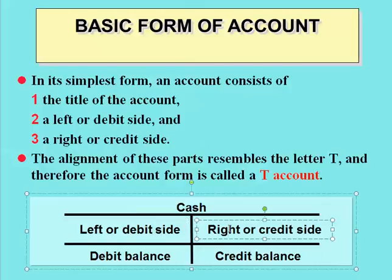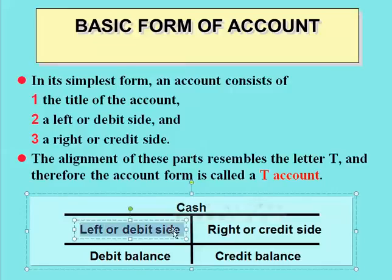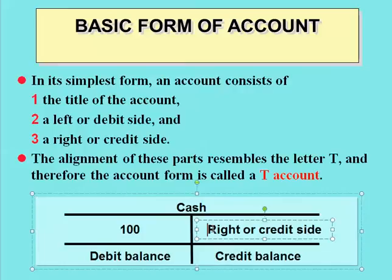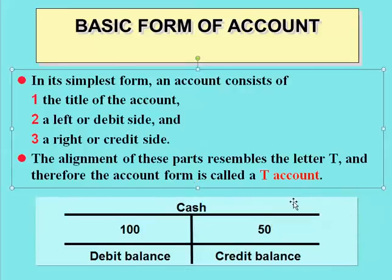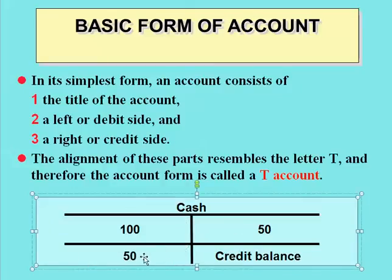The right side of the T-account is called the credit side. I can quickly look at any entries that may have been made. For example, we may have a $100 debit and a $50 credit. That would leave us with a debit balance of $50, because the debit side is greater than the credit side.